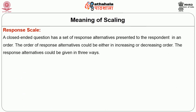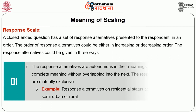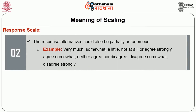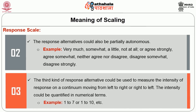A close-ended question has a set of response alternatives presented in an order — either increasing or decreasing. Response alternatives can be given in three ways: first, autonomous alternatives that are mutually exclusive, such as urban, semi-urban, or rural. Second, partially autonomous alternatives like 'very much, somewhat, a little, not at all' or 'agree strongly, agree somewhat, neither agree nor disagree, disagree somewhat, disagree strongly.' Third, response alternatives that measure intensity on a continuum from left to right or right to left, quantified numerically on a scale of 1 to 7 or 1 to 10.